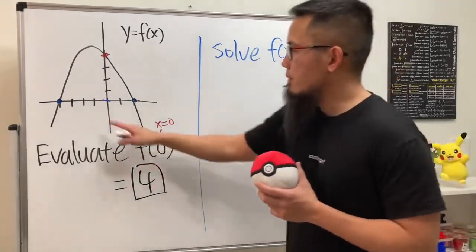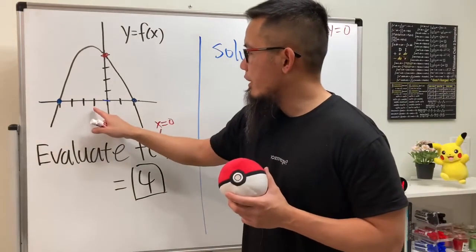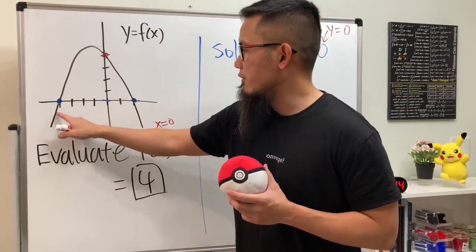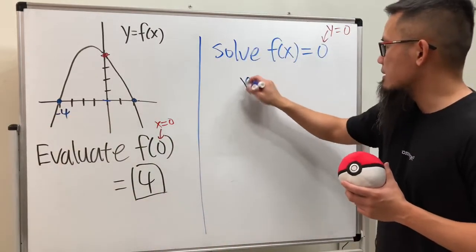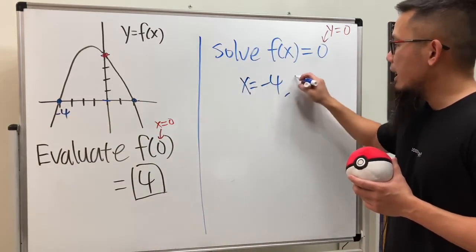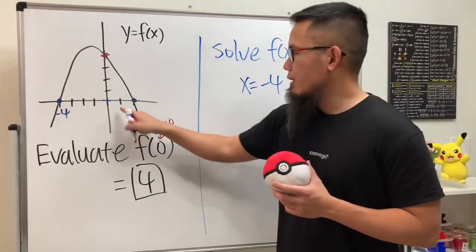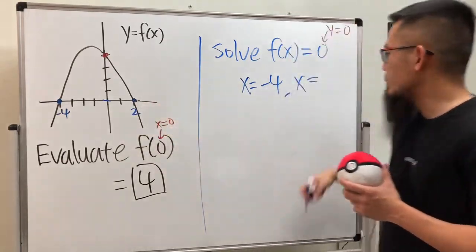The first x for you is negative 1, negative 2, negative 3, negative 4. So this right here is the negative 4, so the first answer is x equals negative 4, and the second answer is 1, 2, right here. So x is equal to 2.